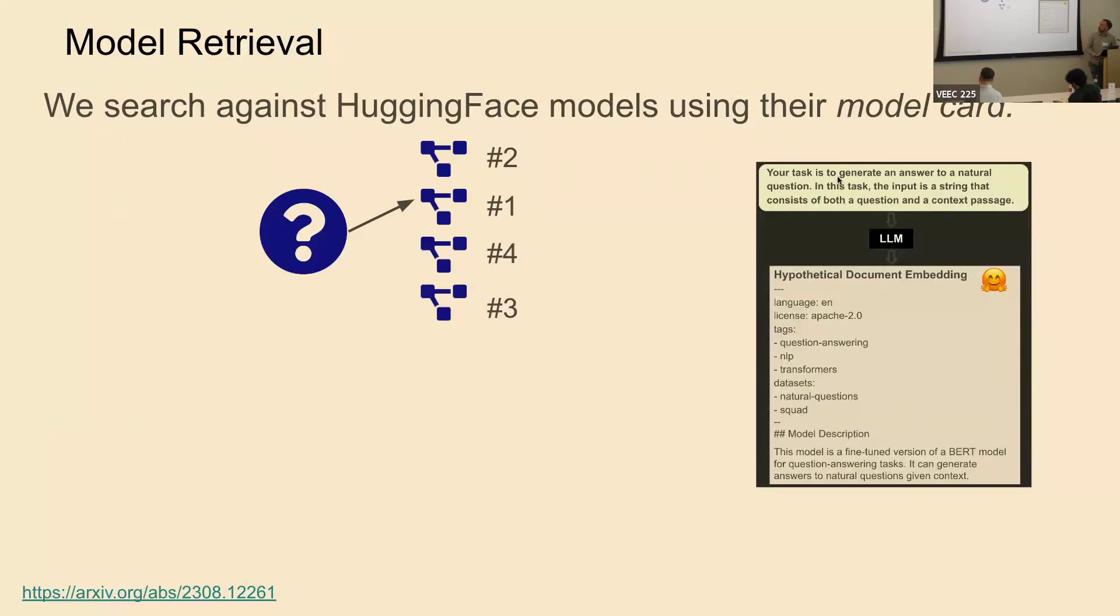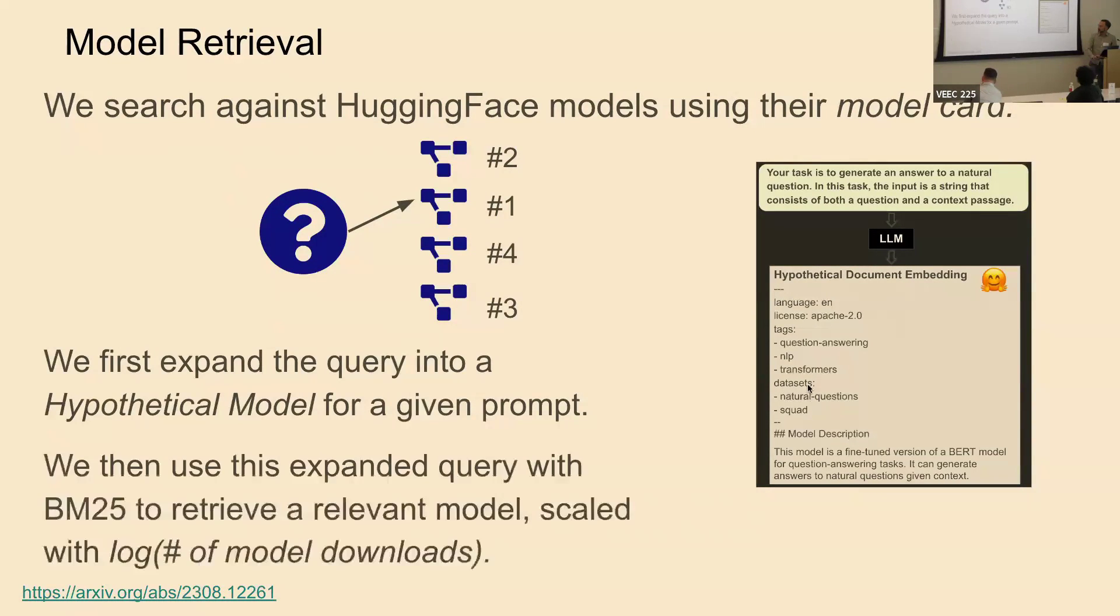What we ended up doing is we took our query, we used a method called HyDE where you basically generate a hypothetical document that is kind of like a model card, and then we looked it up using BM25 to retrieve a relevant model. This didn't work super well out of the box. So additionally, we scaled this with the log times the number of model downloads, which gave us popular models and popular models tend to be good. That managed to improve our results. There's a lot of other things I would do, like looking into the Hugging Face leaderboard scores, but that's what we did.